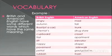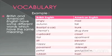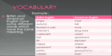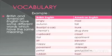Now, British and American English have some different words which have the same meaning. British: angry — American: mad. British: autumn — American: fall. British: boot of a car — American: trunk. British: chemist — American: drugstore. British: cupboard — American: closet. British: flat — American: apartment. British: lift — American: elevator. British: nappy — American: diaper. British: pavement — American: sidewalk. British: petrol — American: gas or gasoline. British: rubbish — American: trash.